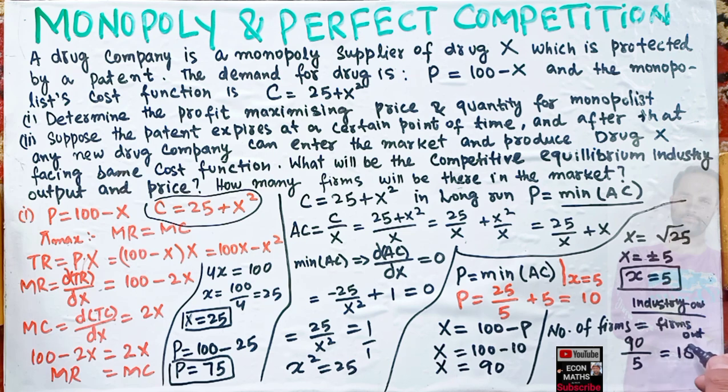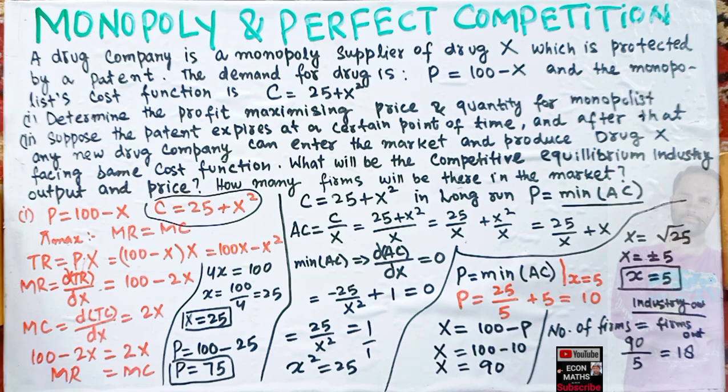So number of firms = 90 / 5 = 18. The number of firms in competitive equilibrium will be 18. I hope I made myself clear in this video. Thank you.